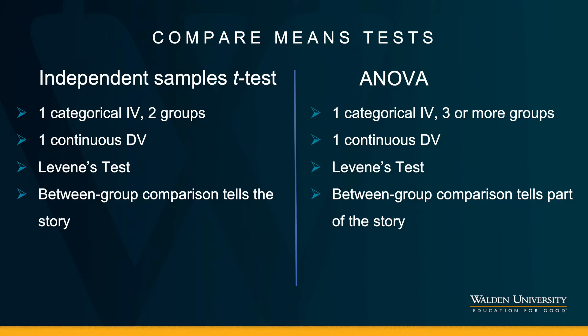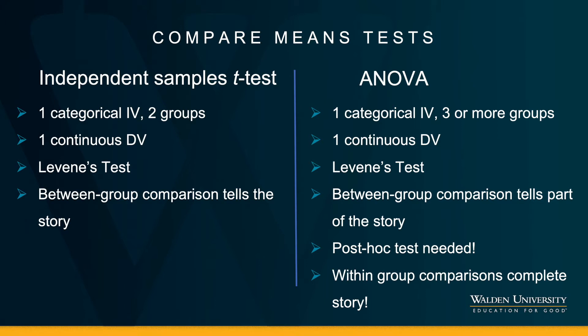When I have the between-group comparison between two groups in the t-test, I'm done — I know where the differences are. In an ANOVA test, I need to look a little deeper. I need the post-hoc test to assess the exact within-group comparisons that complete my story of the data.